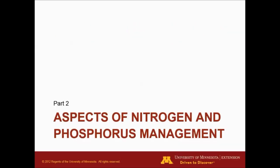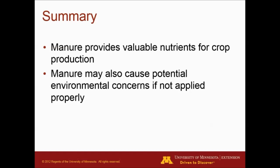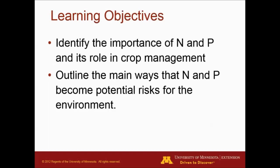In this section, we're going to be covering some of the aspects related with nitrogen and phosphorus management. To summarize the previous video, we know that manure provides valuable nutrients for crop production. Manure may also cause potential environmental concerns when it is not applied properly. In this video, we're going to identify the importance of nitrogen and phosphorus and its role in crop management, and outline some of the main ways that nitrogen and phosphorus become potential risks for the environment.